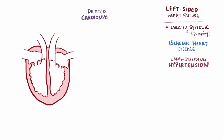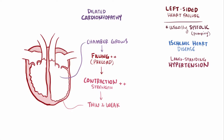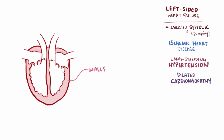Another potential cause is dilated cardiomyopathy, where the heart chamber dilates or grows in size in an attempt to fill up the ventricle with larger volumes of blood — or preload — and stretch out the muscle walls to increase contraction strength via the Frank-Starling mechanism. Even though this can work for a little while, over time the muscle walls get thinner and weaker, eventually leading to muscles so thinned out that it causes systolic left-sided heart failure. Ultimately, the ventricular walls need to be the right size relative to the size of the chamber for the heart to work effectively, and any major deviation can lead to heart failure.